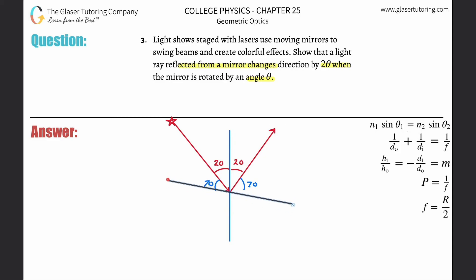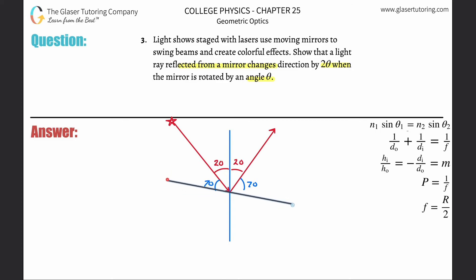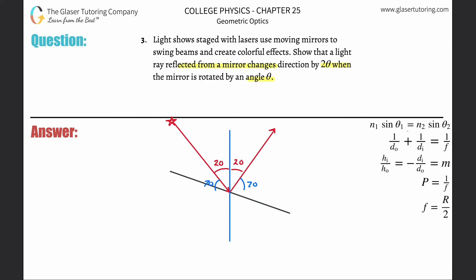If you rotate the mirror 30 degrees, what happens to the blue angle? Going 10, 20, 30 — if it started at 70 and you rotated 30 degrees, that angle becomes 40 degrees. Does that make sense? 40 degrees.